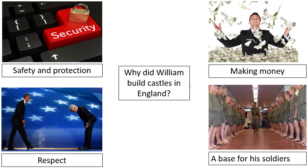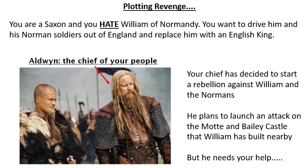This is where we get into the main part of our lesson. I want you to imagine you've gone back in a time machine and you are a Saxon - the name we give to the English people that lived there at that time. You are a Saxon and you hate William of Normandy. We know he wasn't very popular, so that's no surprise. You want to drive him and his Norman soldiers out of England and replace him with an English king - you want to rebel. The guy there with the arrow pointing to him is Aldwin, and he is the chief of your tribe.